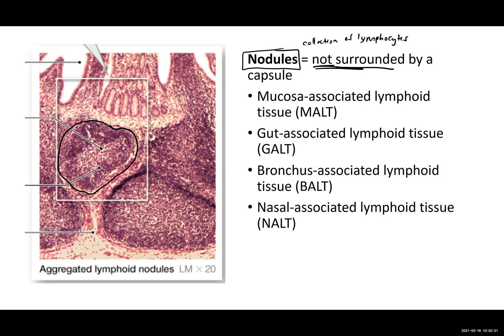What we can see with this line here in the center is what is called the germinal center. This is where you have lots of dividing lymphocytes — we should think dividing lymphocytes. These are our T cells: remember our cytotoxic T cells and our B cells, which ultimately become plasma cells and produce our antibodies or immunoglobulins.